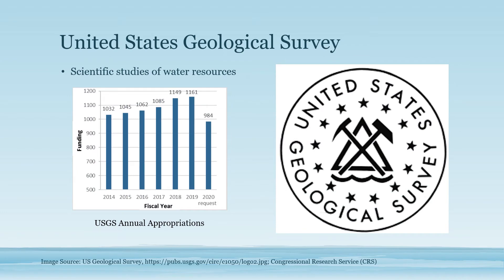An additional federal agency that does work in water resources is the United States Geological Survey, or USGS. It's a U.S. federal agency under the Department of the Interior, in charge of conducting studies of water resources — one of their main mission areas. They publish reports on water quality and quantity, and have lots of data, but not always enough funding. If the issue you're investigating is about data and research, it's probably under the USGS.